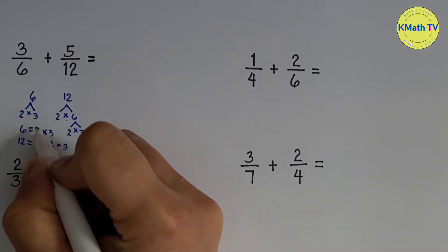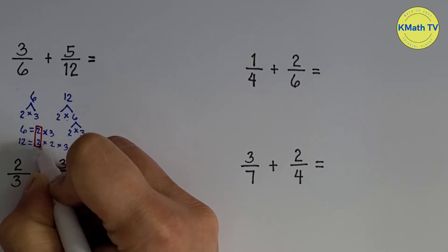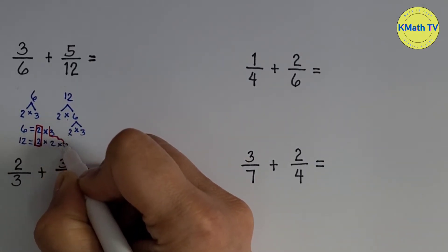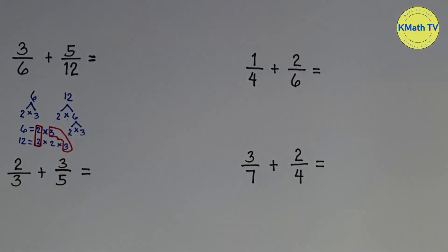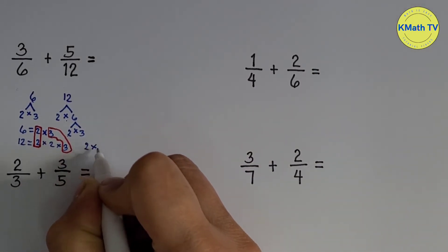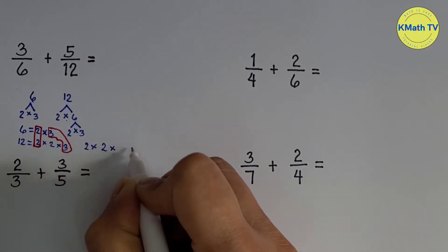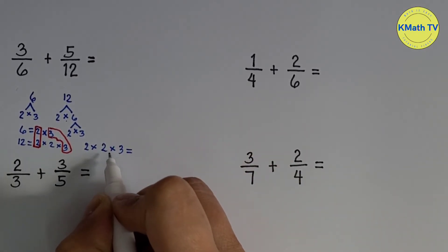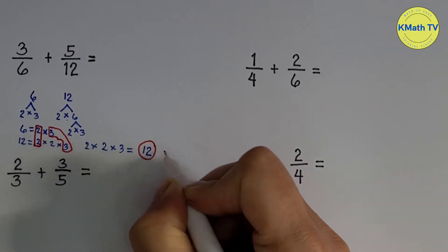Now let's box the common factors of 6 and 12. The first common pair is 2 — counted as 1. The other common factor is 3 — another pair, also counted as 1. Next, multiply the common factors and the remaining factor: 2 times 2 times 2 times 3. 2 times 2 equals 4, and 4 times 3 equals 12. This is the LCD.